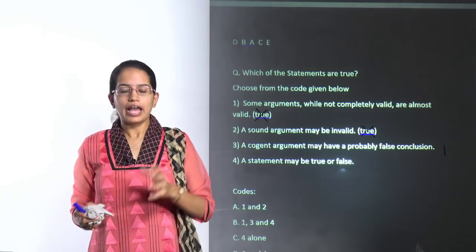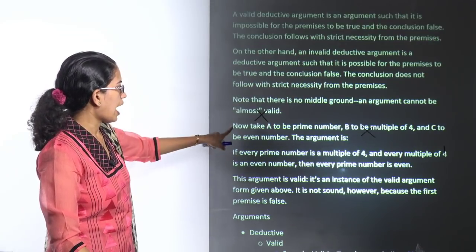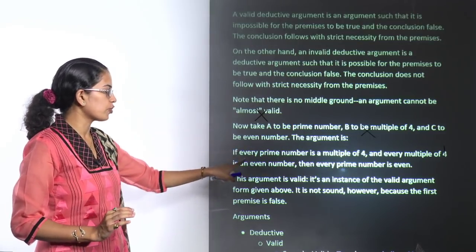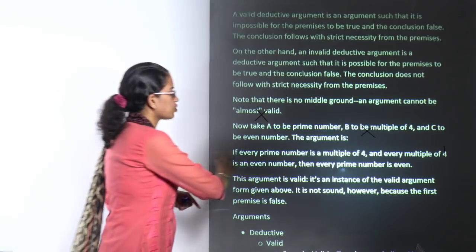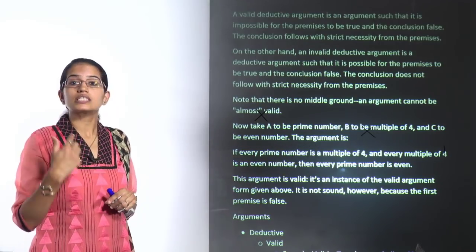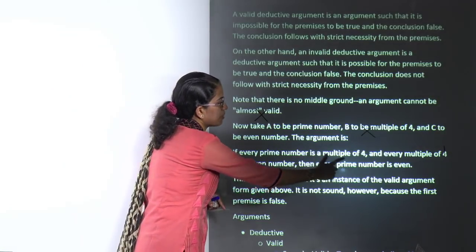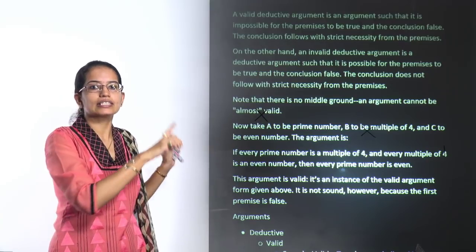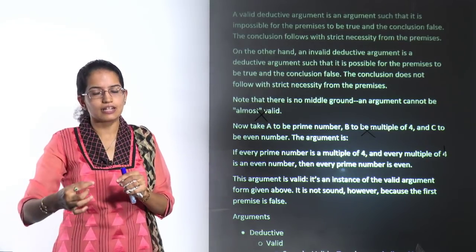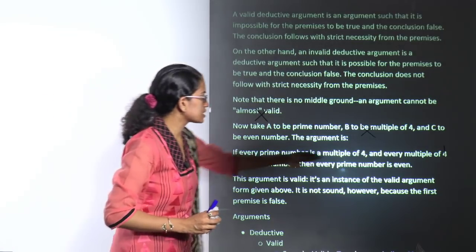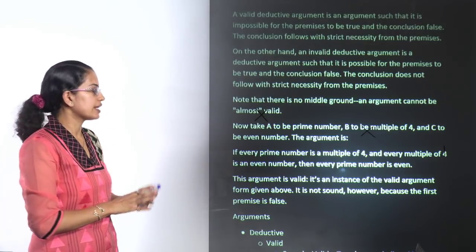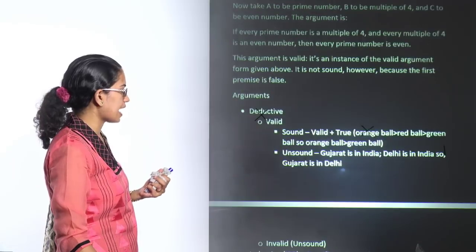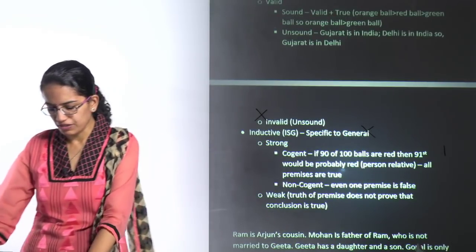For example: if every prime number is a multiple of 4, and every multiple of 4 is even, then every prime number is even. The logical structure is valid, but the premise 'every prime number is a multiple of 4' is false — prime numbers are only divisible by 1 and themselves. So it is valid but not sound. For a sound argument, we need both validity and true premises. Those were the problems covered in this session.